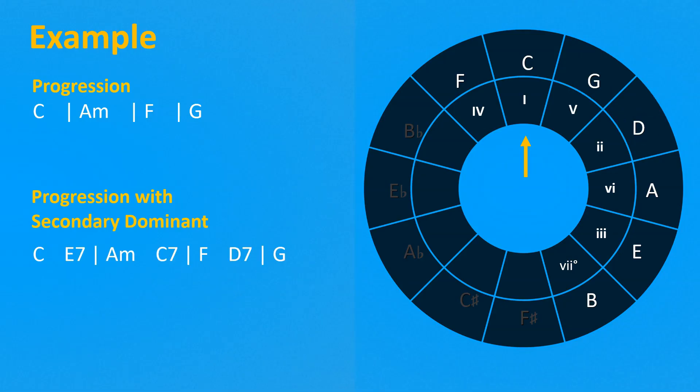So now the progression is C, E7, A minor, C7, F, D7, G.